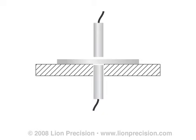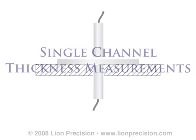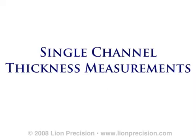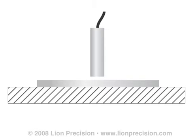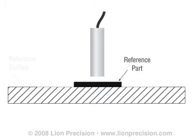First, we will look at the basic single-channel thickness measurement. Single-channel thickness measurements measure the location of the top surface of the part under test while the part rests on a reference surface. As with many non-contact sensor applications, in-process measurements are relative to a reference measurement. A known thickness is established as a reference point and all subsequent measurements indicate the amount of deviation from that reference.